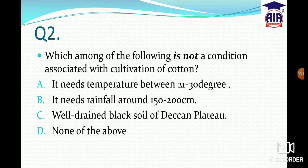Next question: Which among the following is NOT a condition associated with cultivation of cotton? Options: A) It needs temperature between 21 to 30 degrees Celsius. B) It needs rainfall around 150 to 200 cm. C) Well-drained black soil of the Deccan plateau. D) None of the above.